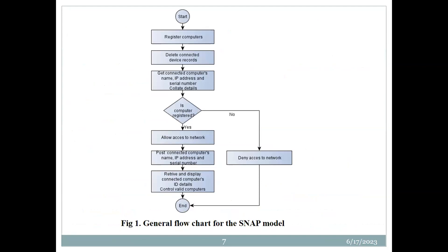As shown in the figure, the algorithm requires that first we register computers, then delete connected device records, get connected computers' authentication details — that is the name, the IP address, and the serial number. Then, the basis for allowing or denying a computer to the network is based on the registration. If the computer is registered, it is allowed network access and the details are posted; if not, it is denied access. That is the flowchart for that algorithm.